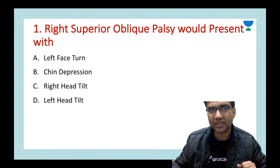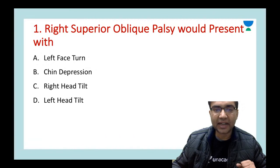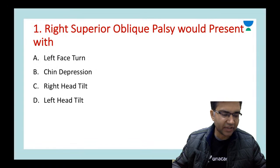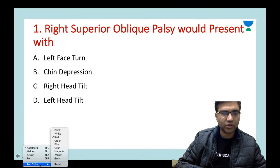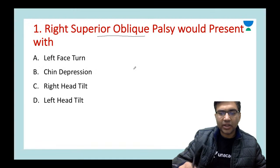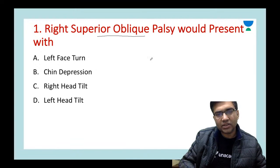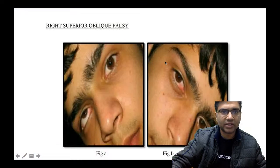Right superior oblique palsy would present with: A) left face turn, B) chin depression, C) right head tilt, or D) left head tilt? To solve these questions, whenever we have a question on superior oblique palsy, remember two mnemonics: one is BOOT, and the other is VOOC — 'better on opposite tilt' and 'worse on opposite gaze'.